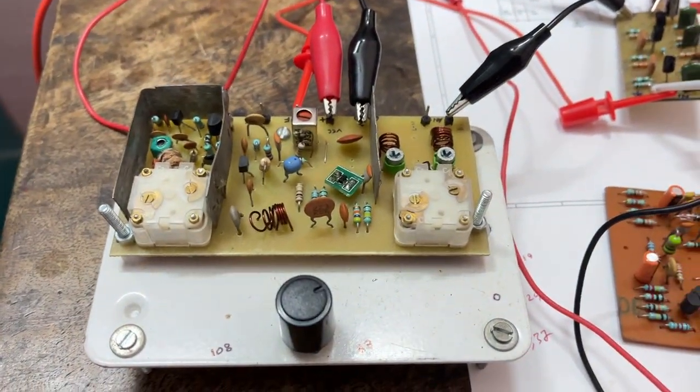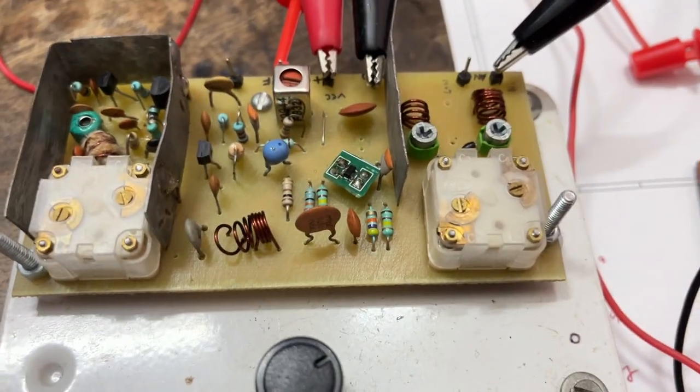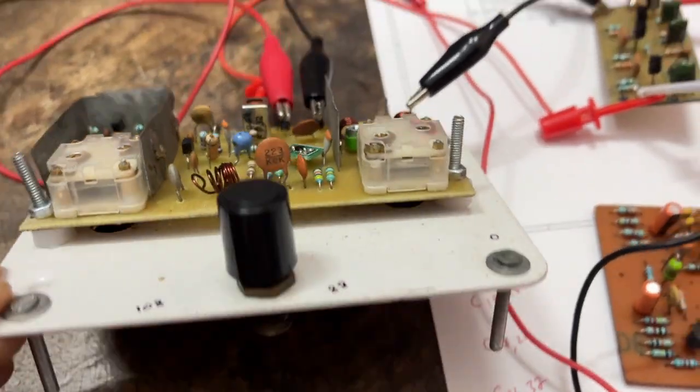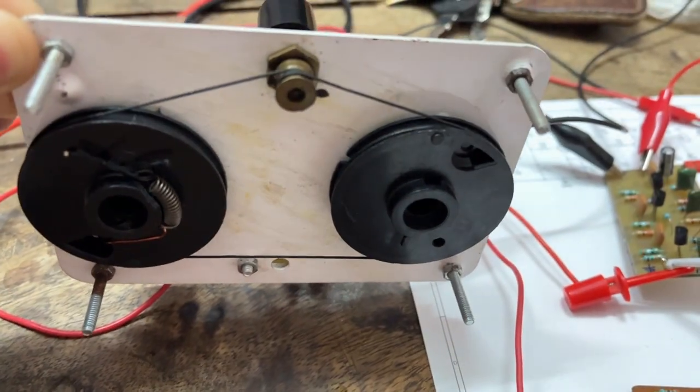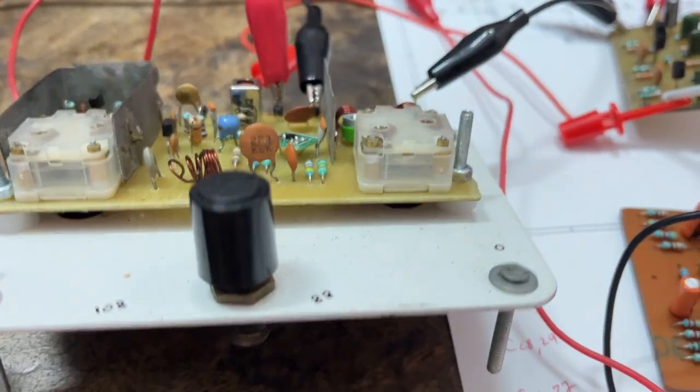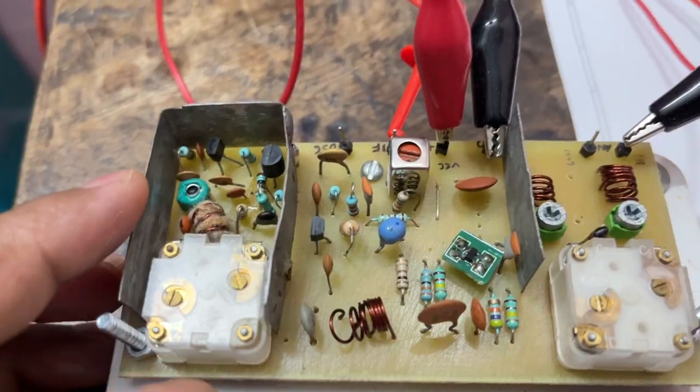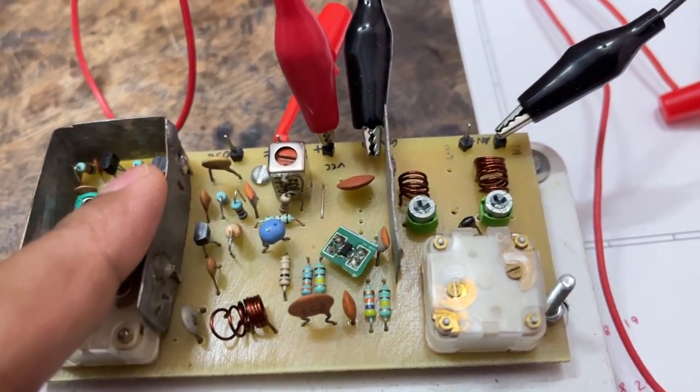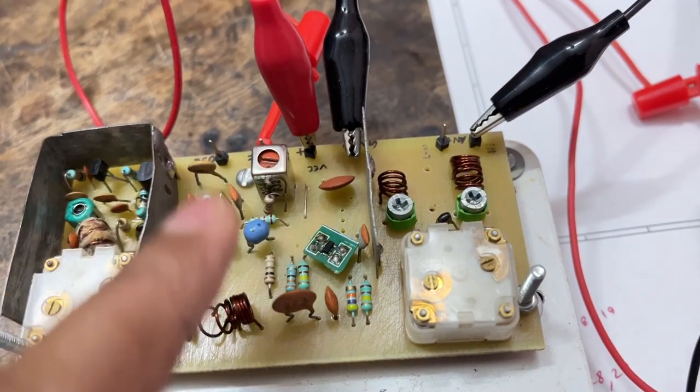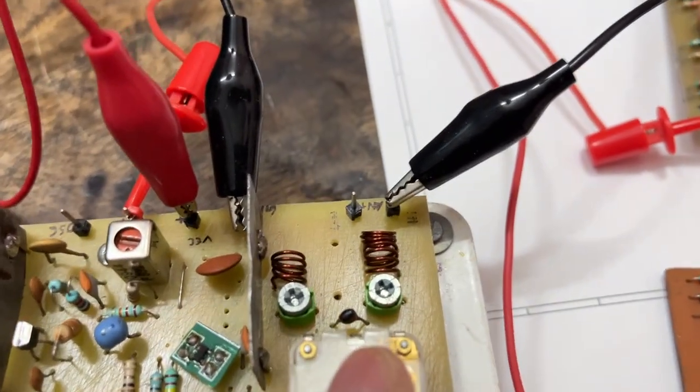So here I am testing my DIY FM front-end with dual variable capacitors. This is the oscillation section, mixer, RF amplifier for the oscillation output, and this is the RF input section.